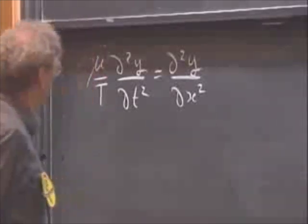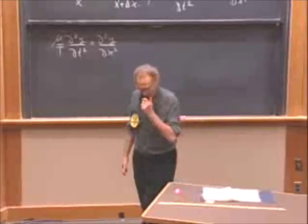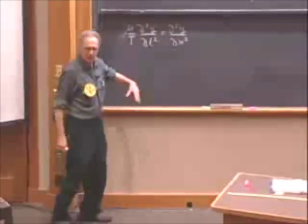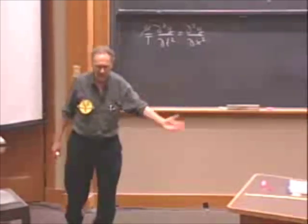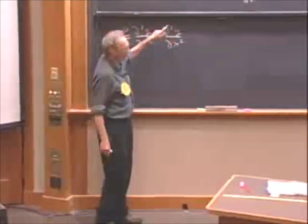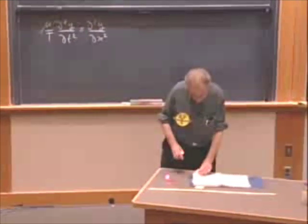So now what you have is that mu divided by T times ∂²y/∂t² at constant value of x is now ∂²y/∂x². And believe it or not, this is a big moment in our life. You have here a differential equation of y, which is a function of x and t, whereby here you take the double derivative in time, and here you take the double derivative in space, in location.